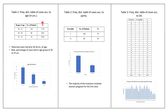The first table shows the distribution of cases according to age. Majority of cases in our study were between 18 to 34 years, with the maximum percentage in the age group 20 to 25 years. The second table shows that majority of instances involved women pregnant for the first time; out of 200, 140 were primigravida while the rest were multigravida. The third table is the frequency distribution of cases according to gestational age, where maximum percentage lay between 30 to 33 weeks of gestation.